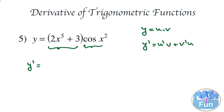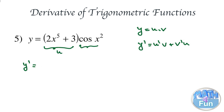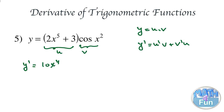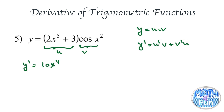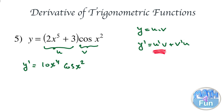y prime equals u prime times v. u prime is 5 times 2, which is 10, times x to the power 4, and the derivative of plus 3 is 0. All of this, which is u prime, is multiplied by v, which is cosine x squared. So we have 10x to the power 4 times cosine x squared. That finishes the first part, u prime v.